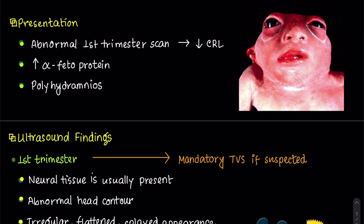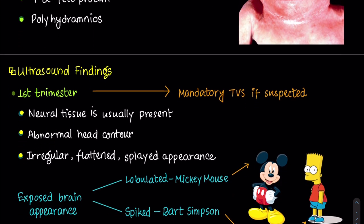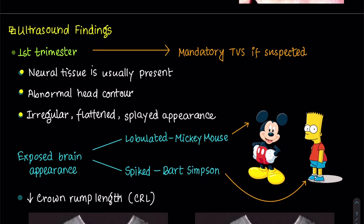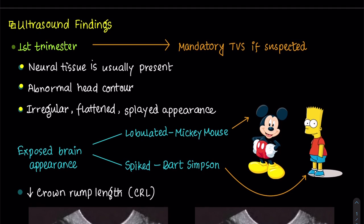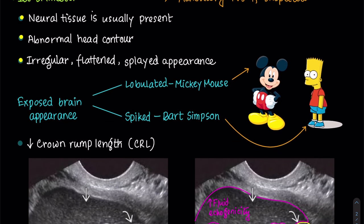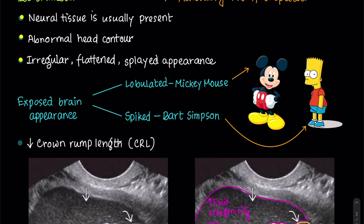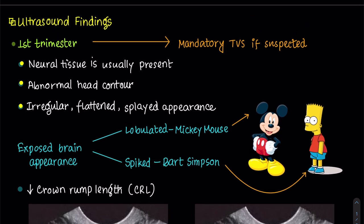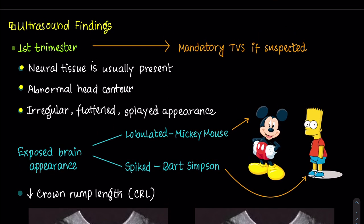Now, the ultrasound findings. In the first trimester, neural tissue is usually present. Head contour is abnormal — the head is irregular, flattened, with a splayed appearance. Exposed brain has a lobulated Mickey Mouse-like or spiked appearance. Crown-rump length is less than expected. Don't forget to perform a transvaginal scan in suspected cases.